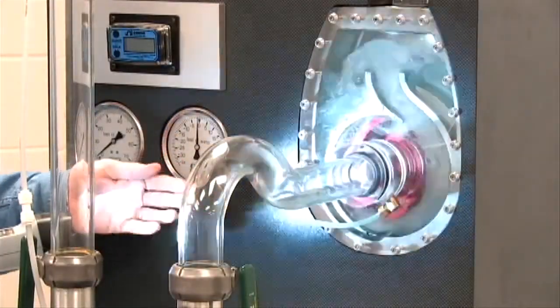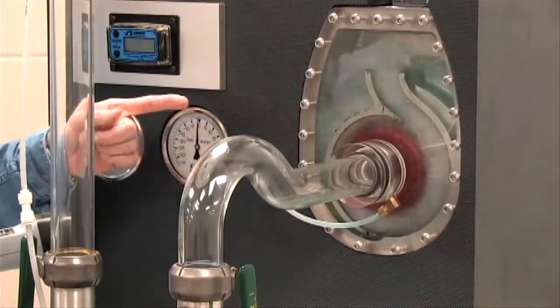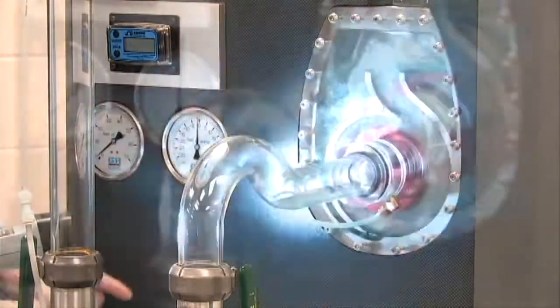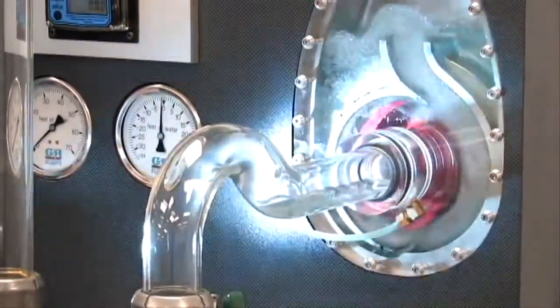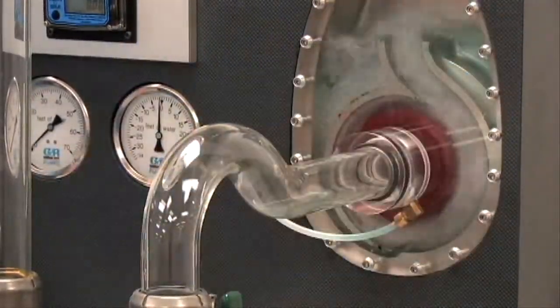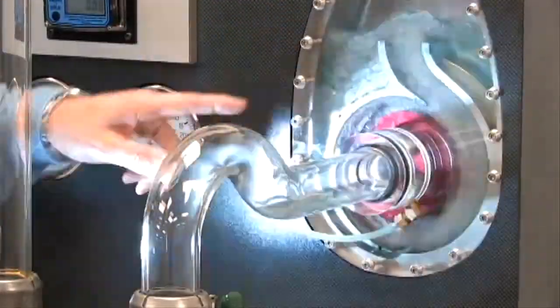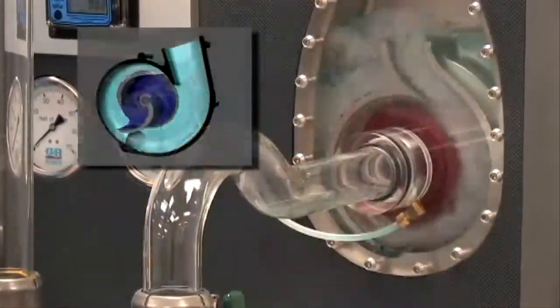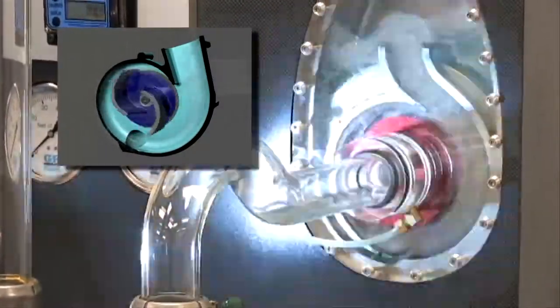After we fill the volute casing with water and we energize the pump, the impeller turns in a counter-clockwise rotation. The initial prime of the pump is slung through the volute scroll, or the ever-increasing water channel, into a pressure cavity or discharge chamber inside the volute. Inside this discharge chamber, the air and water separate.